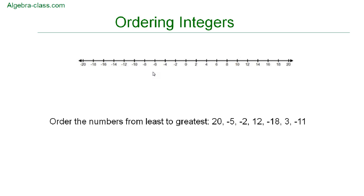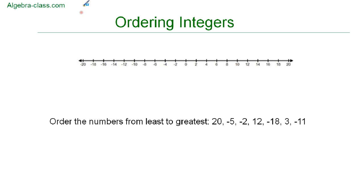So to help us order this set of numbers, we're going to plot them on the number line. The numbers that I'm going to plot are 20 — I'm just going to put a circle on each number on the number line — and negative 5,